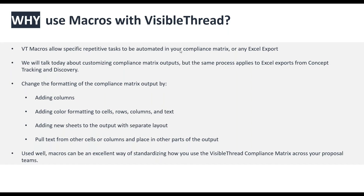Today I'm specifically talking about customizing compliance matrix outputs, but the same process applies to exports from the concept tracking and discovery tabs. Some examples of tasks you might want to automate: adding columns to a compliance matrix, adding color formatting to cells or rows, modifying text, adding new sheets with a specific layout, adding a summary sheet, or pulling and joining specific text from cells.